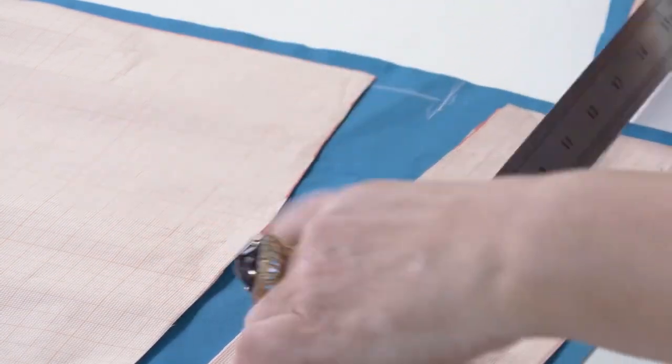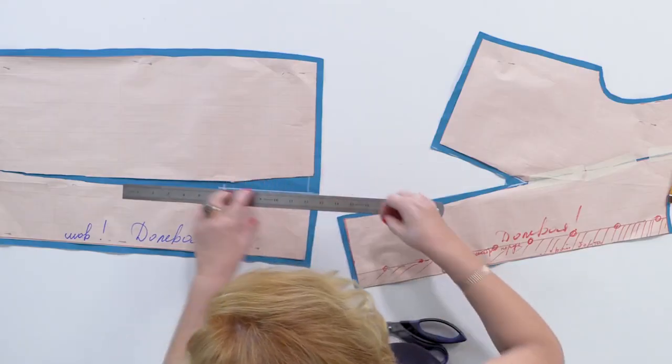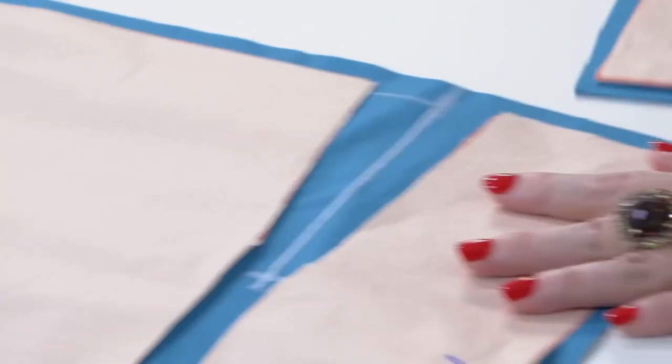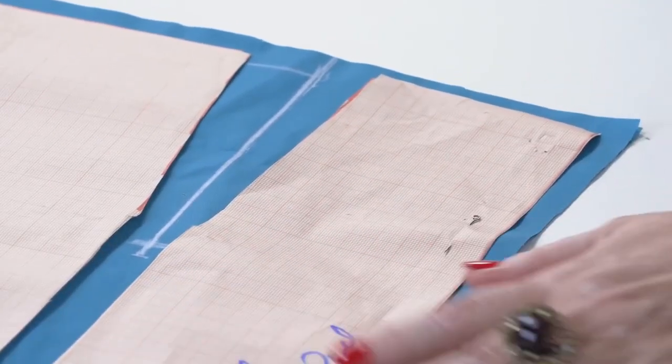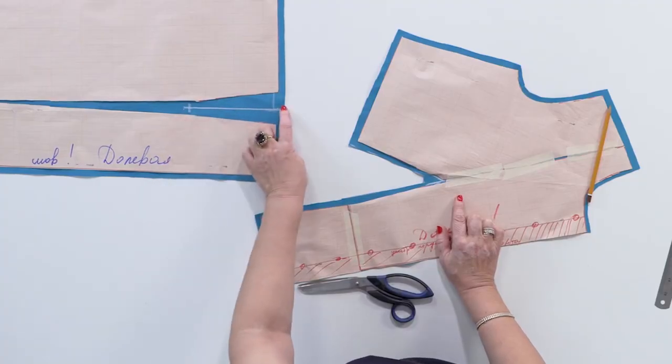That's all for today. I've cut both the skirt and the bodice. Next time, I'll continue working with the dress. I'll show you how to adjust the pattern for cutting the facing and the lining. My name is Irina Baugste. Subscribe to my channel. Thank you. Goodbye.